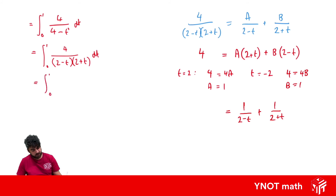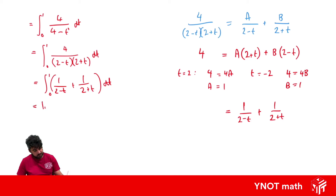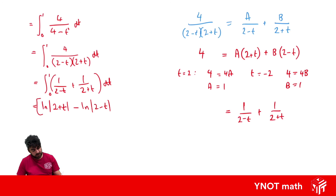So we now have the integral from 0 to 1 of [1/(2−T) + 1/(2+T)] dt. These are much easier to manage. The integral of 1/(2+T) is ln|2+T|. For 1/(2−T), the derivative of the denominator is −1, so we get −ln|2−T|. This is evaluated between 0 and 1.